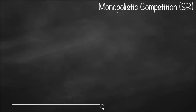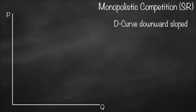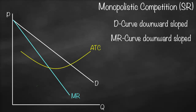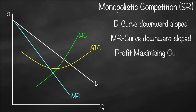This video is about monopolistic competition in the short run. The x-axis represents quantity and the y-axis represents price. Our demand curve is downward sloped, and our marginal revenue curve is also downward sloped. We then draw our average total cost, which is u-shaped, and our marginal cost, which intersects average total cost at its minimum.